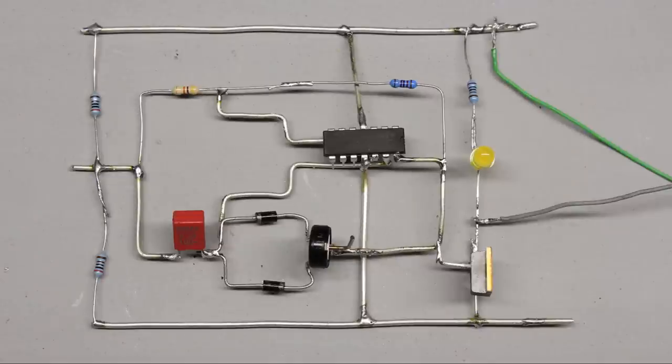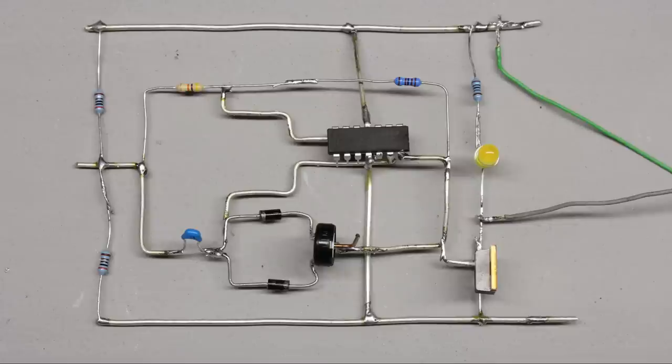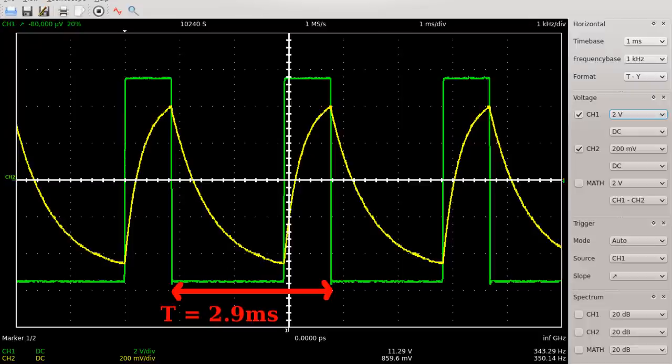By reducing the resistance or the capacitance of the RC loop, the frequency increases. When using a 1nF capacitor, the resulting switching frequency is approximately 340Hz.